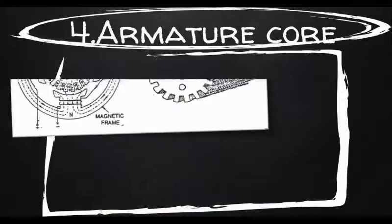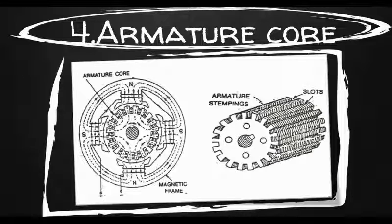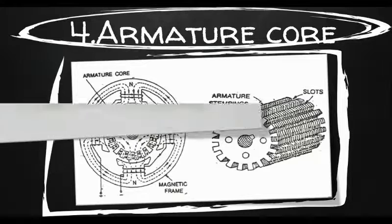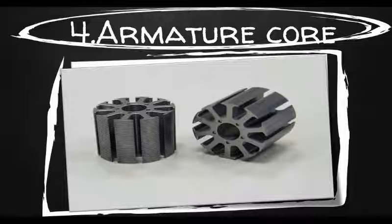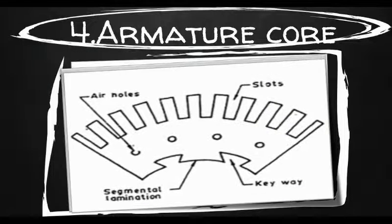Armature core: It houses the armature conductors or coils and causes them to rotate, and hence cuts the magnetic flux of the field magnets. Its most important function is to provide a path of very low reluctance to the flux through the armature from a north pole to a south pole, as you can see in the figure. It is cylindrical or drum shaped and is built up of circular steel discs or laminations, and is keyed to the shaft. These laminations are perforated for air ducts which permit axial flow of air through the armature for cooling purposes. Such ventilating channels are clearly visible in the laminations in the figure, shown by the air holes.